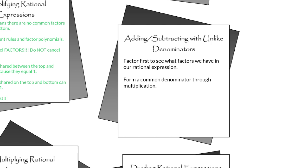From there, you also need to adjust the numerator. So if you're going to change the denominator, you also have to adjust the numerator. You can't just change the bottom and hope that the tops will work out — you have to change the top as well. After you've done those three things, go back to your addition and subtraction rules, and then you can add and subtract.